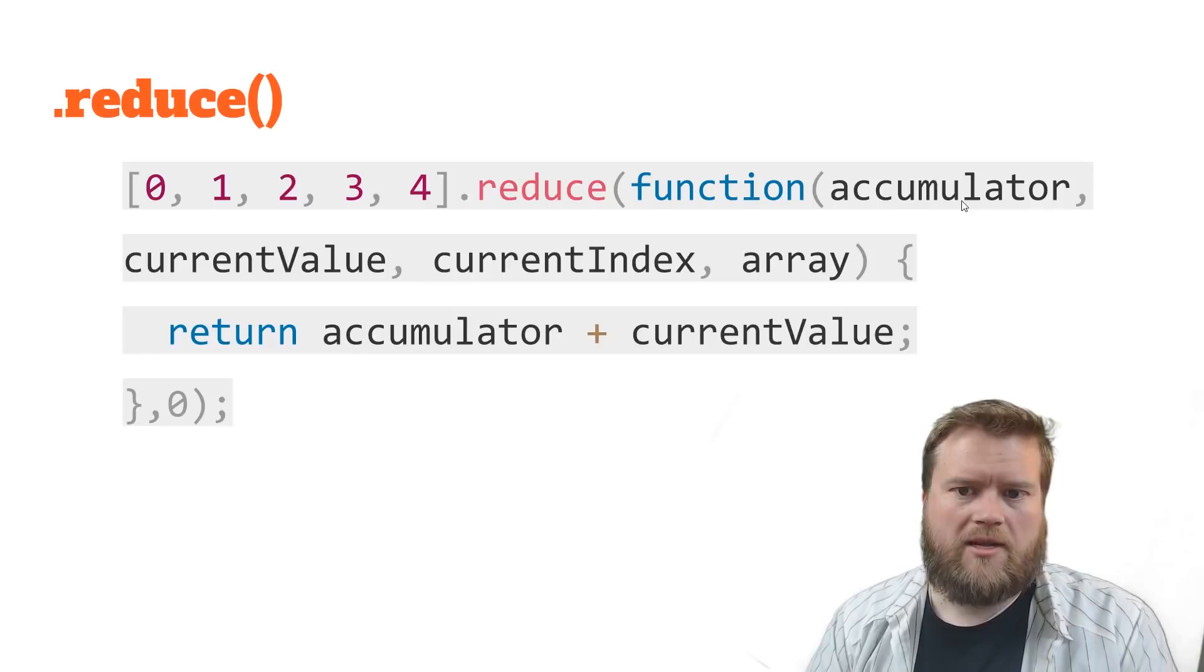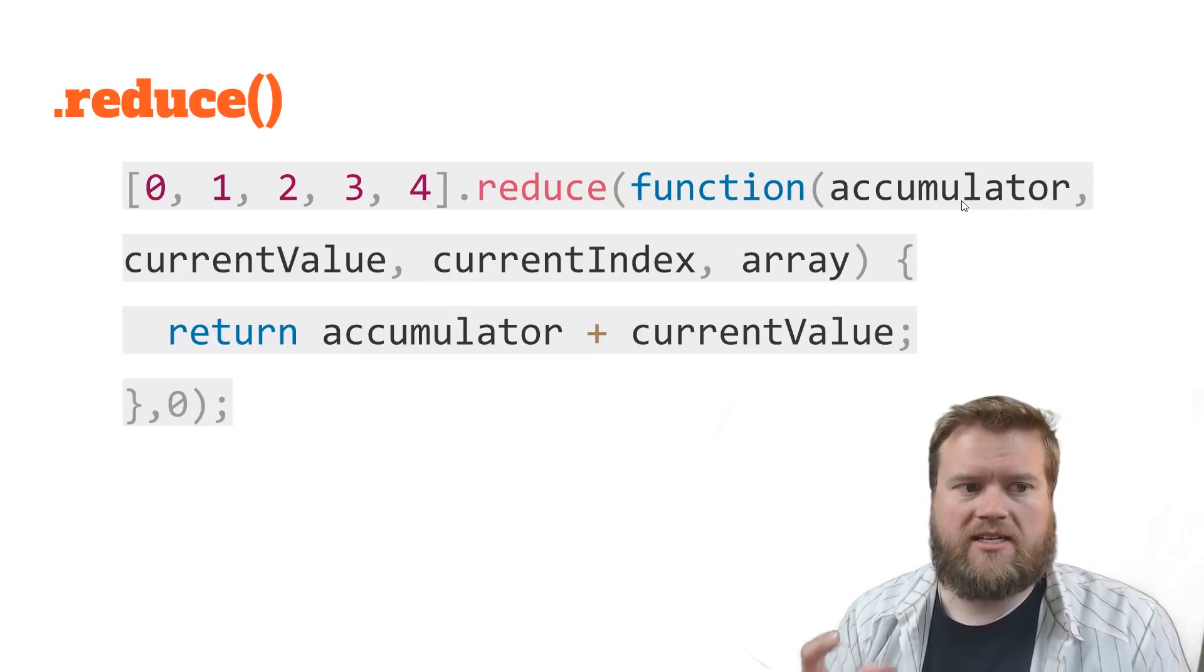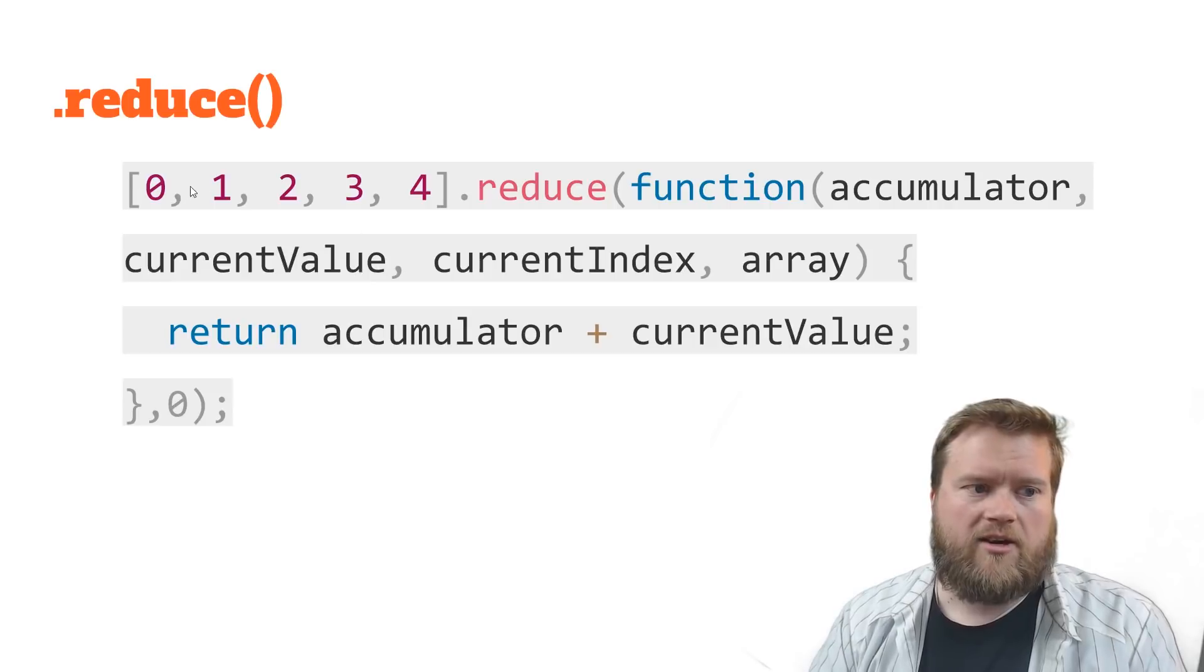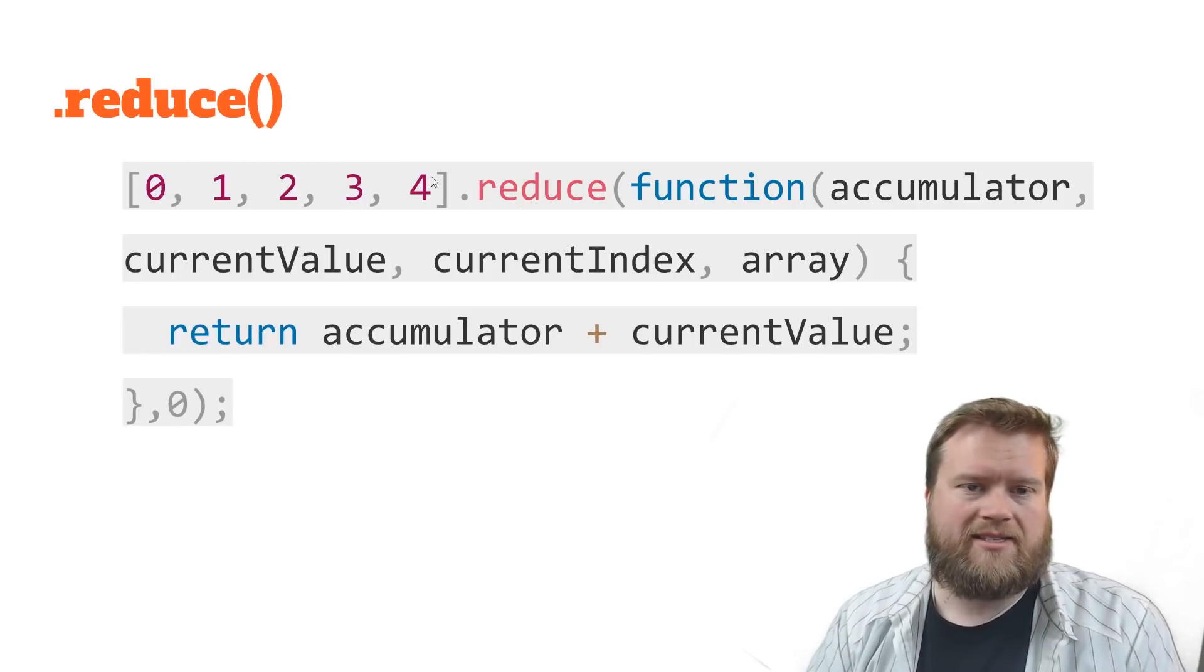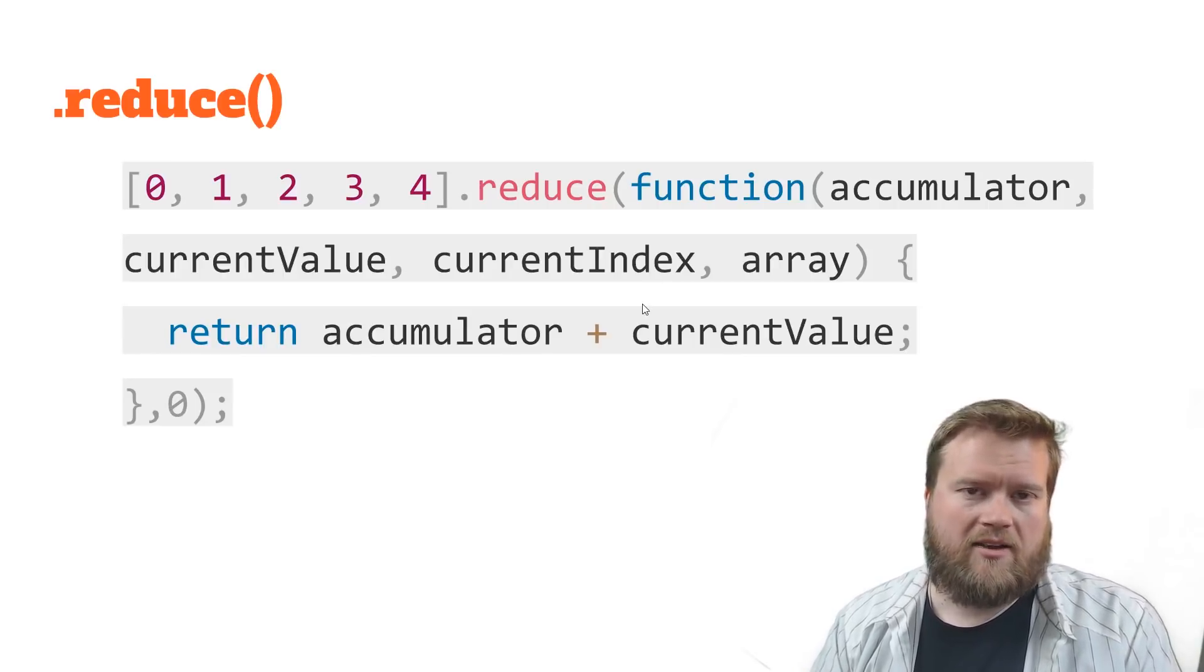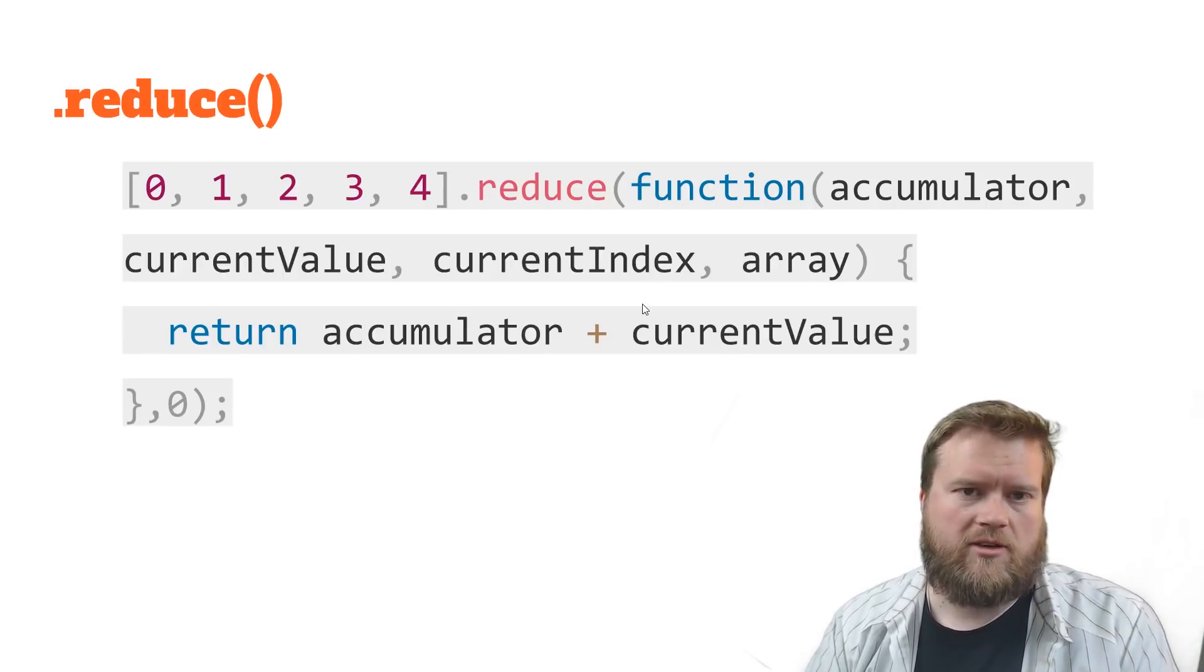And like I said, you get the accumulator. And that's every time this runs on each value, your accumulator gets updated. You have the current value. That's where inside each one of the array that you're at, the index of 0, 1, 2, 3, 4, and then array. That's the original array that you passed in. So that really makes it easy to do some really complicated things. And there's a lot of good use cases when you start running reduce.